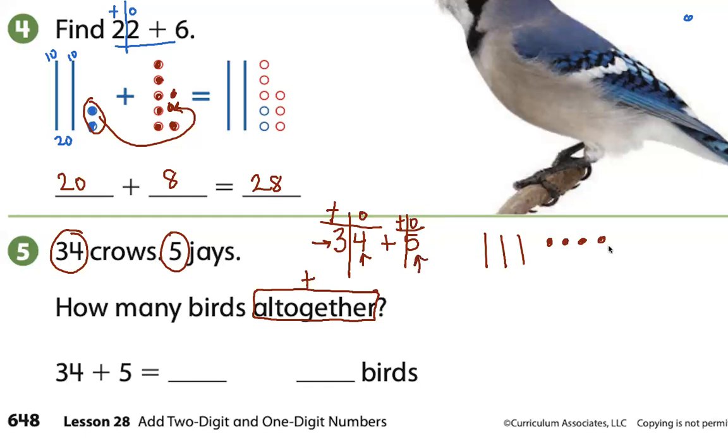And then we are going to add 5 more ones. One one, two ones, three ones, four ones, five ones. So now we have ten, twenty, thirty plus 9 equals 39. There are 39 birds all together.